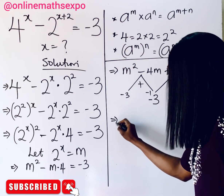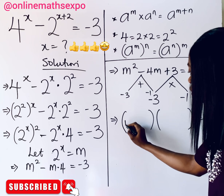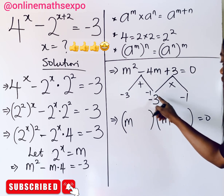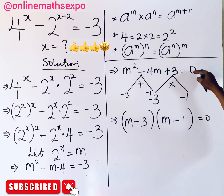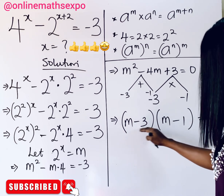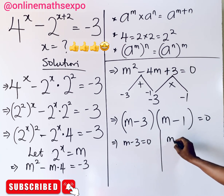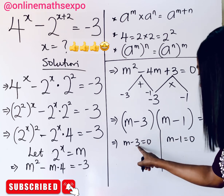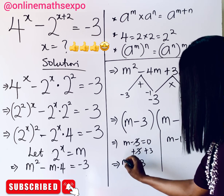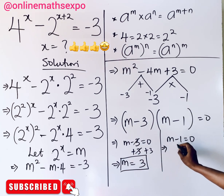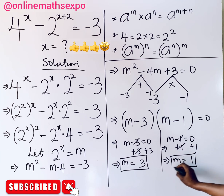We open two brackets. Since it is m squared, one m goes in each bracket. Placing our two values, we get (m minus 3)(m minus 1) equals 0. This means m minus 3 equals 0 or m minus 1 equals 0. Adding 3 to both sides of the first gives m equals 3, and adding 1 to both sides of the second gives m equals 1. So we have two values of m.